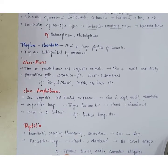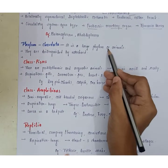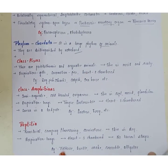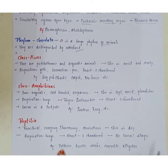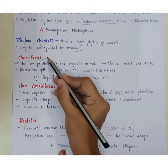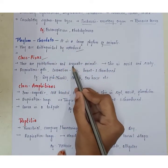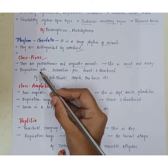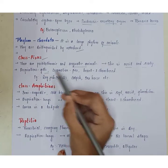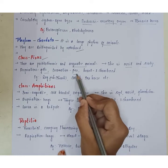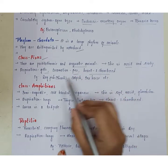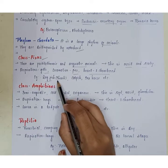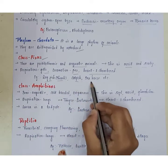Phylum Chordata is a large phylum distinguished by the presence of a notochord. Class Pisces are poikilothermic (cold-blooded) aquatic animals. The skin is moist and scaly, respiration occurs through gills, locomotion is by fins, and the heart is two-chambered. Examples include dogfish (shark), catfish, and seahorse.